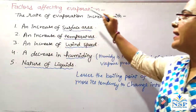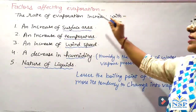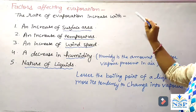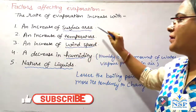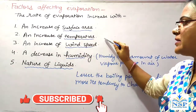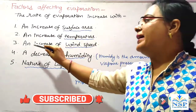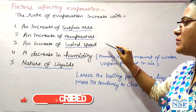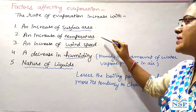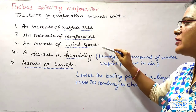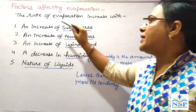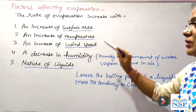Factors affecting evaporation: The rate of evaporation increases with an increase of surface area, an increase of temperature, and an increase of wind speed. This means surface area, temperature, and wind speed are directly proportional to the rate of evaporation.